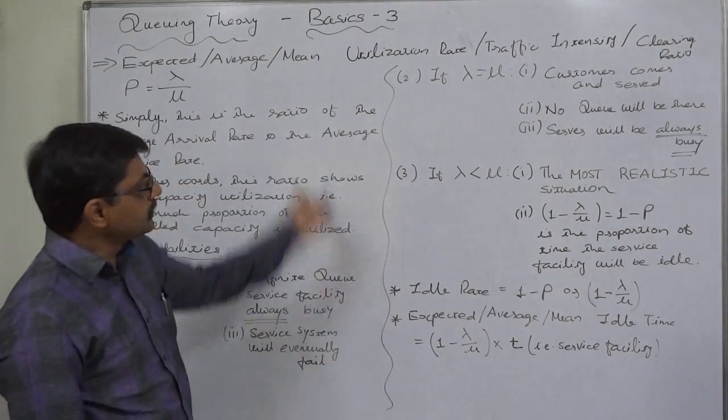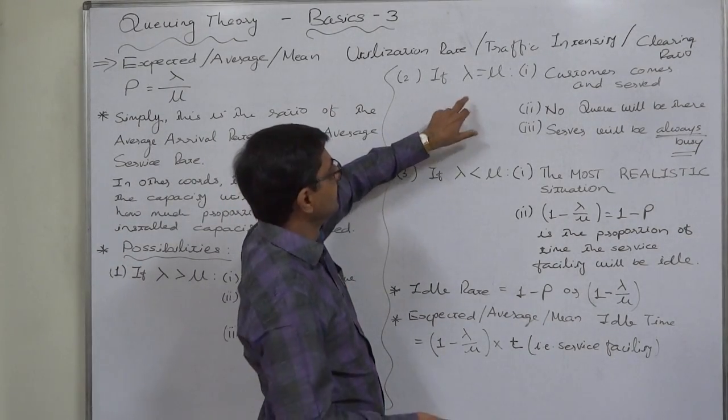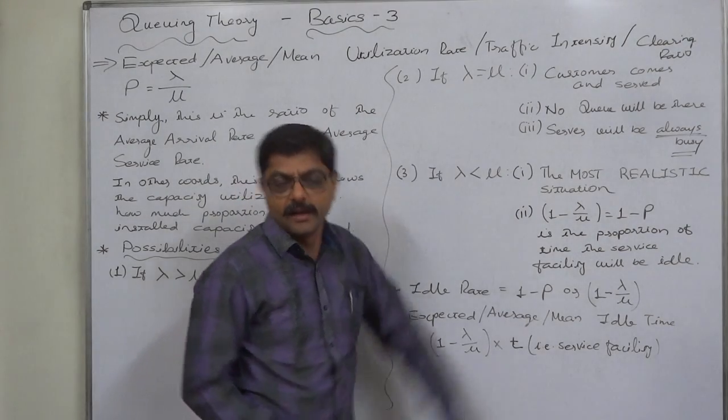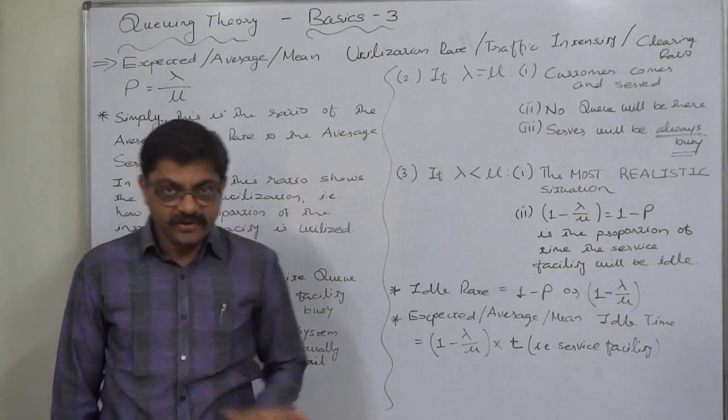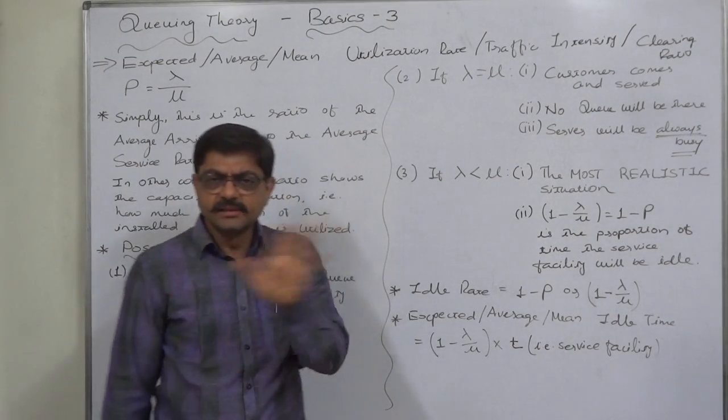Now the second possibility is ideal. Mu and lambda are equal. Lambda equals mu, mu equals lambda. 100% capacity utilization. That is the ideal situation.